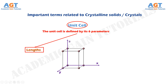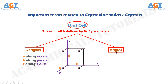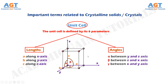The unit cell is defined by its six parameters: three parameters along the length and three parameters for the angles. Along the lengths: length parameter A is assumed along the x-axis, length parameter B along the y-axis, and length parameter C along the z-axis. The angle parameters are: alpha, between the y and z-axis; beta, between the z and x-axis; and gamma, between the x and y-axis. These are the six parameters that define the unit cell.